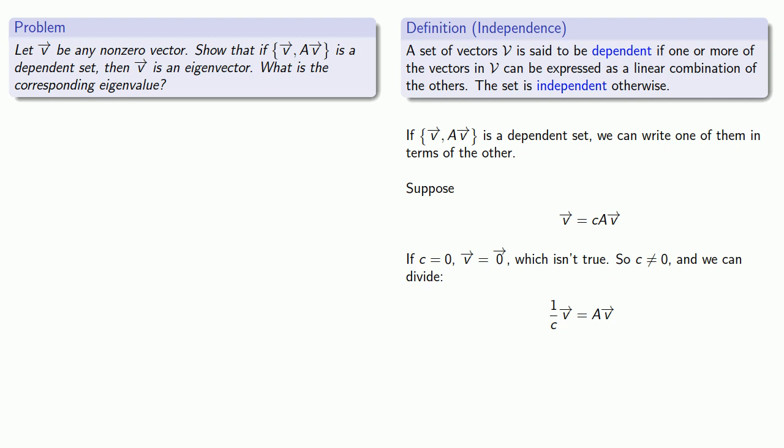And if it's not written down, it didn't happen. Let's go ahead and write that if v, Av is dependent, then something times v must be A times v, where something is usually some real number.